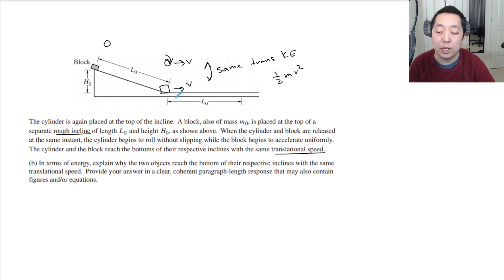Okay. At the bottom, they have the same translational kinetic energy. But this guy is rolling, so he also has rotational kinetic energy. Okay. So how does this guy have more energy? Well, this is a rough incline. So they start with the same mechanical energy. They both start with mgh0. Right? Or m0gh0. They start with the same mechanical energy. But they end with different energies.